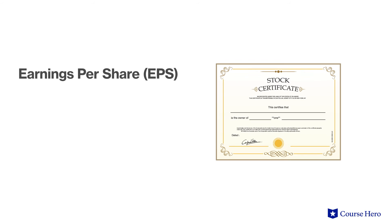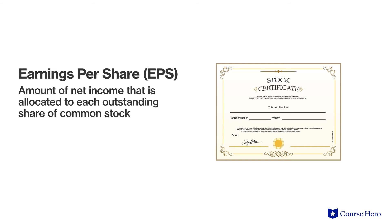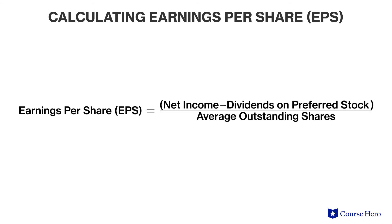Earnings per share, or EPS, is the amount of net income that is allocated to each outstanding share of common stock. EPS can be computed by subtracting preferred dividends from net income and dividing that figure by the average number of outstanding common shares.